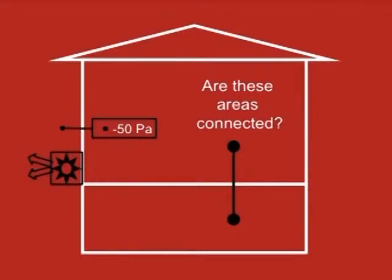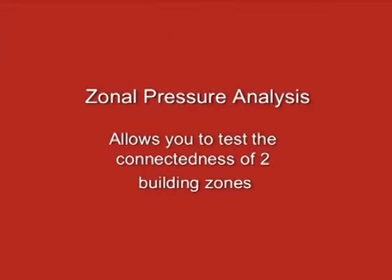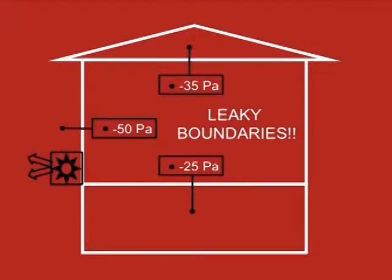This test determines the degree of connectedness between two zones of a building. If we record a value between 0 and 50 pascals during zonal pressure analysis, then the boundary between the two zones is a leaky one.